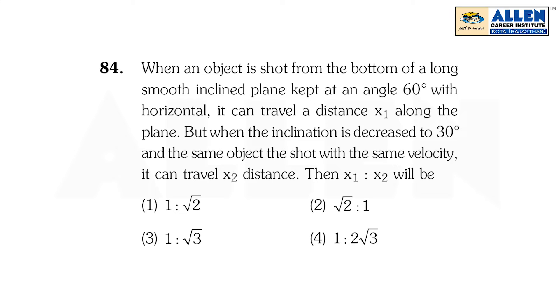Question number 84, paper code P2. The question is: when an object is shot from the bottom of a long smooth inclined plane kept at an angle 60 degrees with the horizontal, it can travel a distance x1 along the plane. But when the inclination is decreased to 30 degrees and the same object is shot with the same velocity, it can travel x2 distance. Then x1:x2 will be?